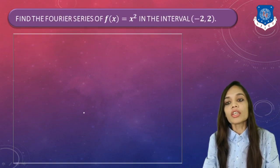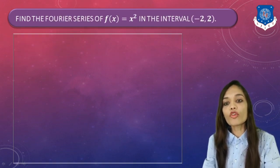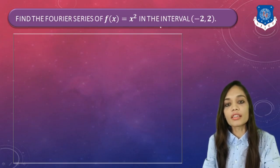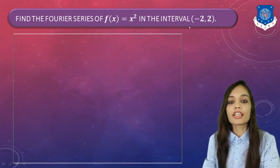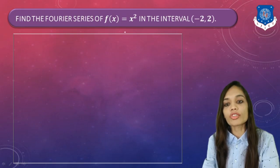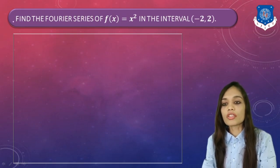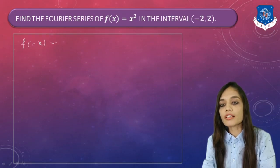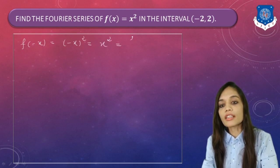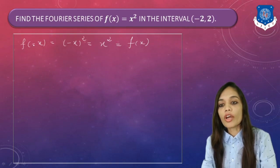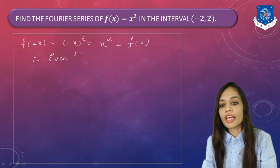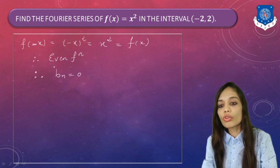Next, let us solve the example: find the Fourier series of f(x) = x² in the interval (-2, 2). The given interval is symmetric, so we first check whether the function is even or odd by replacing x by -x. We get (-x)² = x², which equals f(x). So f(-x) = f(x), therefore the given function is an even function, and the value of Bn = 0.